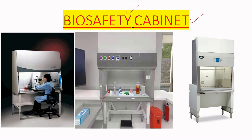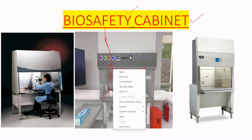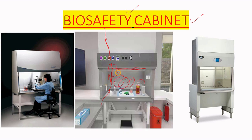In a biosafety cabinet, the air flows inward, maintaining a sterile environment inside. The used air then passes through a HEPA filter positioned at the back, and exits through an exhaust to the outside of the room. In this way, the microbiologist is not affected by pathogenic microorganisms — that is why it is called a biosafety cabinet, because it provides safety from pathogens.